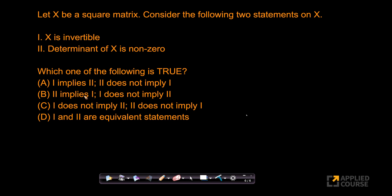Let's go ahead and solve a bunch of simple problems. Here it says, let X be a square matrix. Consider the following two statements on X. The first statement is that X is invertible, which means X inverse exists. That's what it means when it says X is invertible.